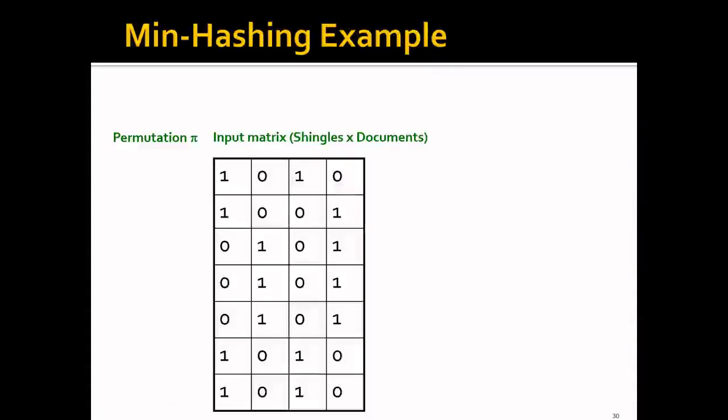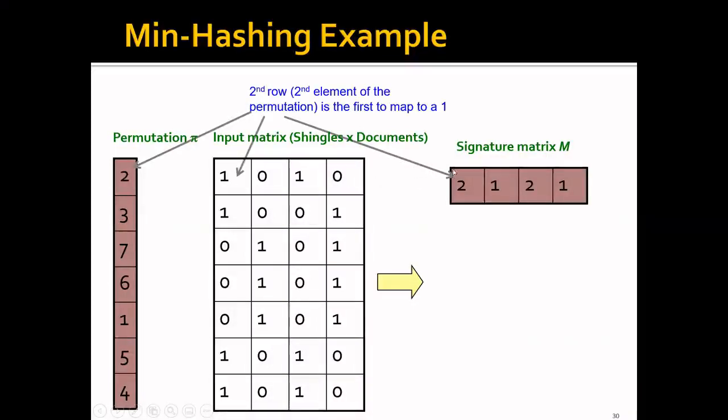Let's go through it step by step to see how we can get the signature matrix. Let's say that this is the input matrix where each column represents one document. As we can see, the first document has four shingles. And we have this permutation. And according to this permutation, let's focus on document one. And according to this permutation, we will first check the first row. And it's a zero. If it's a zero, then we'll go ahead to check the second row, which is here. And this is the first time that we hit a one. Therefore, we can see that the signature, the first signature of the first document would be two. Because the second row is the first to map to one.